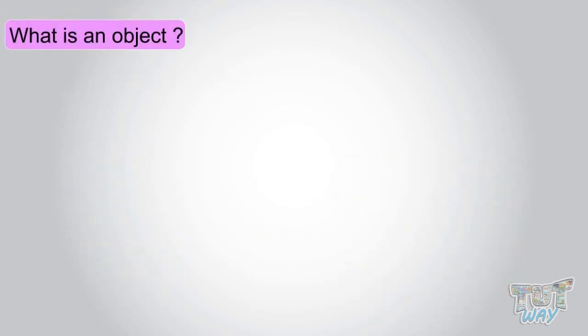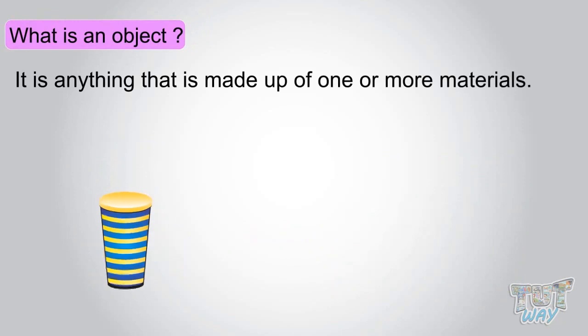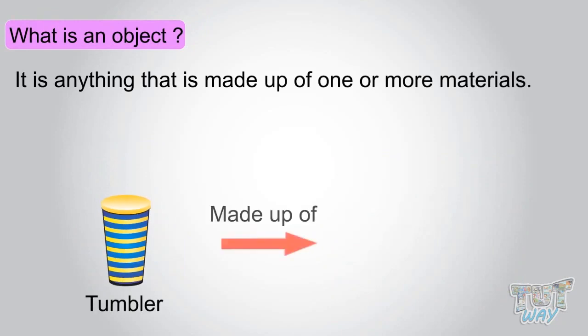So what is an object? It is anything that is made of one or more material. This tumbler is an object made of plastic.